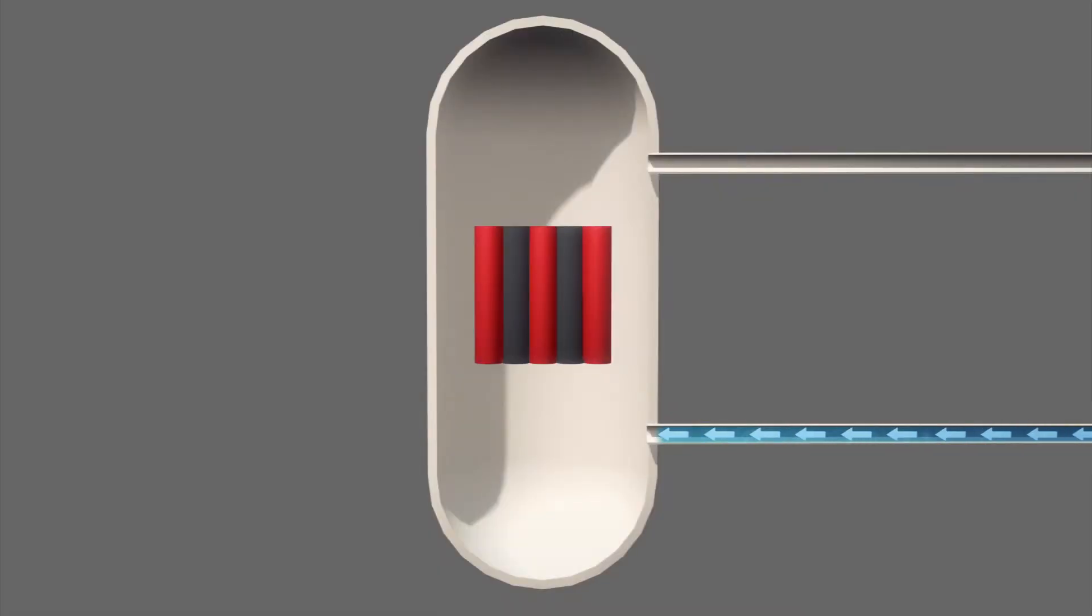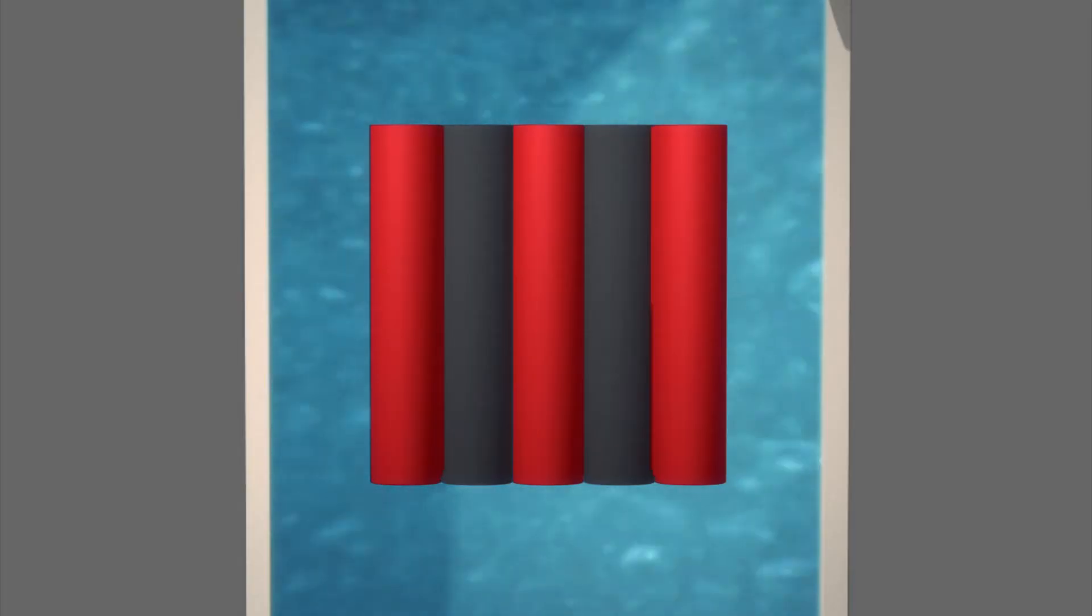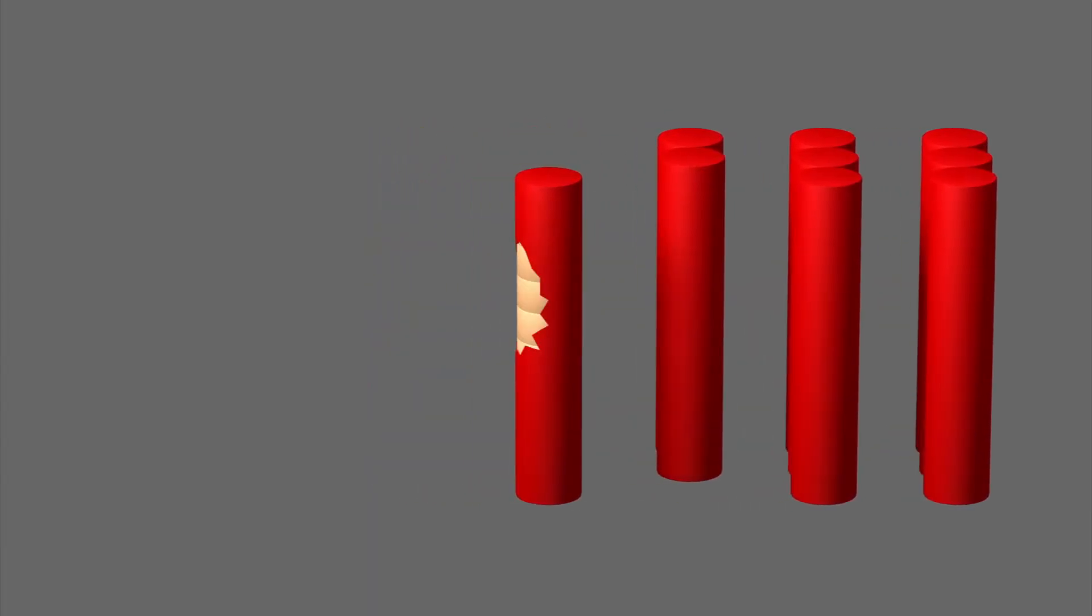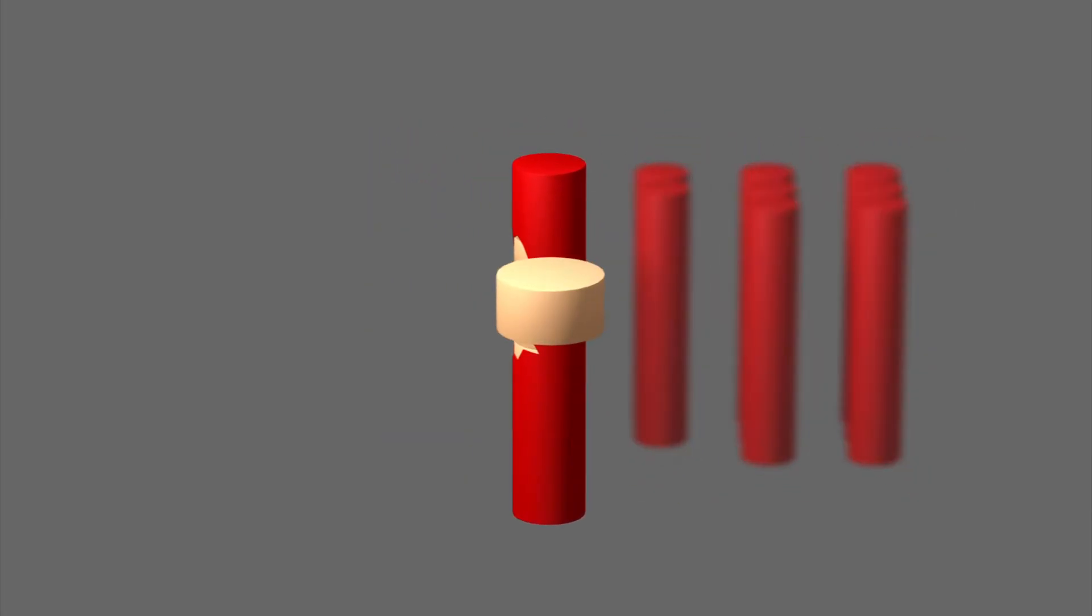Water fills the heavy-water nuclear reactor's core, acting as a coolant and moderator. The core contains fuel rods composed of radioactive natural uranium ceramic pellets.